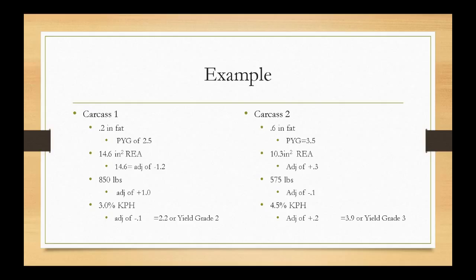In terms of the industry, there is an allowable amount of fat. Yield grades 1, 2, and 3 are considered within the allowable range. Yield grades 4 and 5 are heavily discounted because the amount of fat is simply going to go to waste — the packer can't use all of that fat. So it's very important to yield grade as accurately as possible, because a yield grade 4 is a heavily discounted carcass.